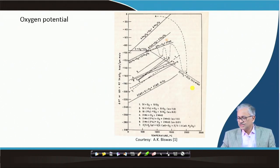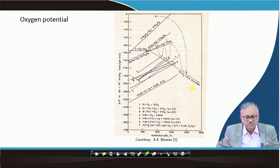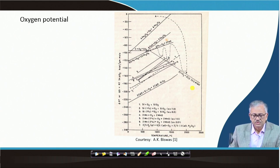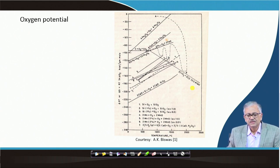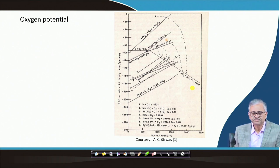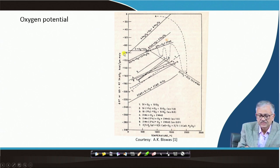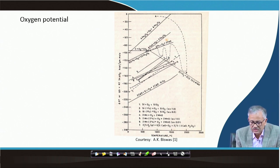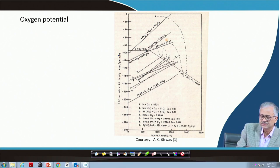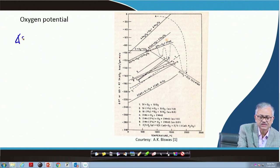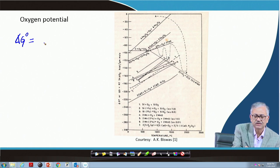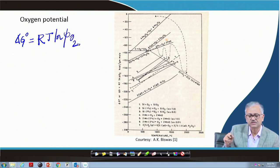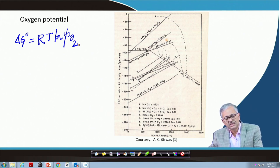This is the Ellingham diagram, which I also projected earlier. Most of you know about this diagram. It basically gives the relative stability of various oxides — mainly the pure metal, pure oxide system. The y-axis gives the oxygen potential, which is the standard free energy change. The standard free energy change is delta G naught, which equals RT ln of the partial pressure of oxygen. That is the y-axis — the oxygen potential of various oxides varying with temperature.